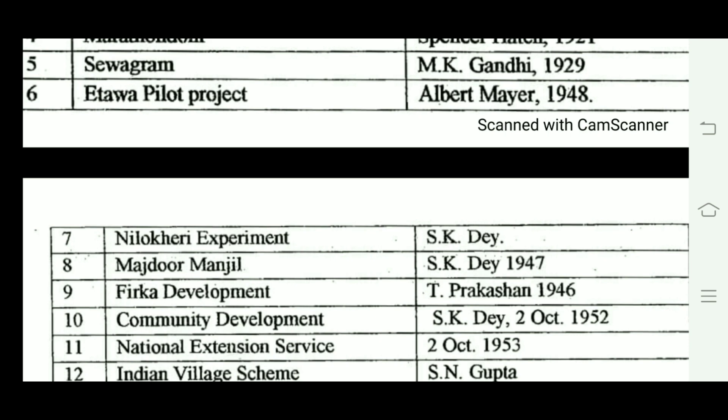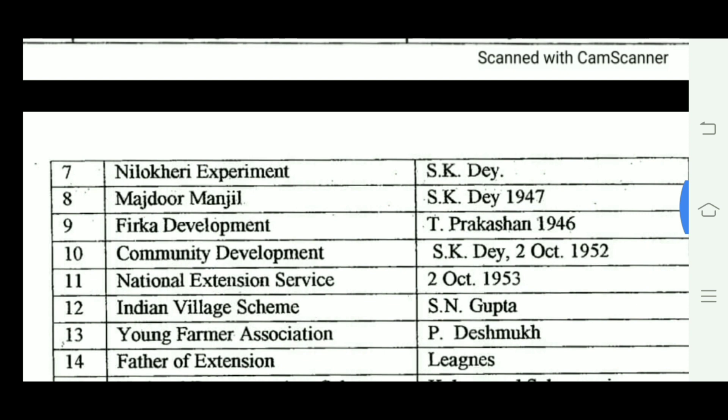The Community Development Project was created on October 2nd, 1952. The National Extension Service (NES) was created on October 2nd, 1953. The NES covered 100 villages with 65,000 population, focused on development activities and progressive development.